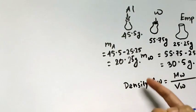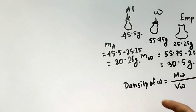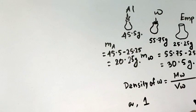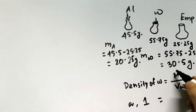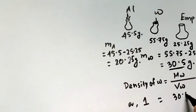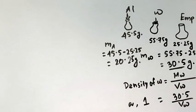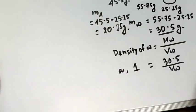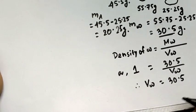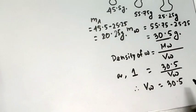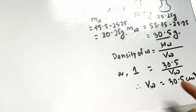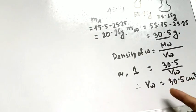Since we have grams, we use CGS units, so the density of water is 1 gram per centimeter cube. The mass of water is 30.5 grams. Solving for volume of water: V_w = 30.5 / 1 = 30.5 cm³. Since the volume of water equals the volume of the bottle, the volume of the bottle is 30.5 cm³.